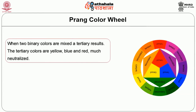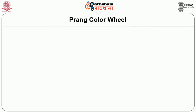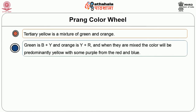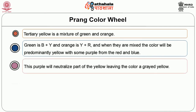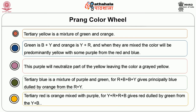When two binary colors are mixed, a tertiary results. The tertiary colors are yellow, blue and red — much neutralized. Tertiary yellow resembles a smoky yellow, tertiary blue is known as slate blue, and tertiary red is the color of old red brick. Tertiary yellow is a mixture of green and orange: green (B+Y) and orange (Y+R), giving predominantly yellow with some purple from the red and blue, which neutralizes part of the yellow leaving a grayed yellow. Tertiary blue is a mixture of purple and green, giving principally blue dulled by orange. Tertiary red is orange mixed with purple, giving red dulled by green.